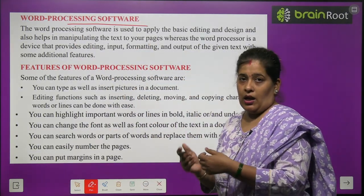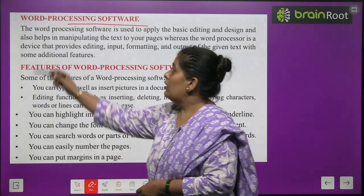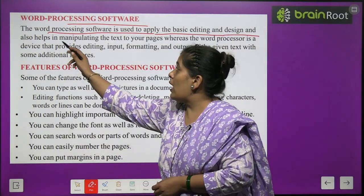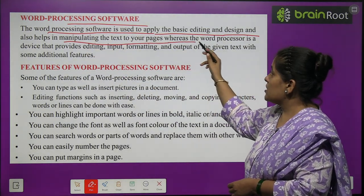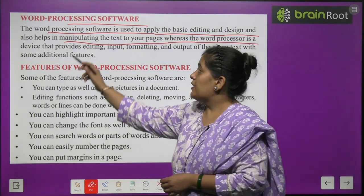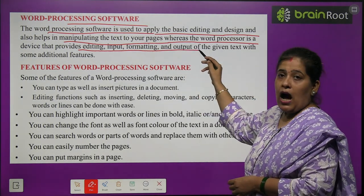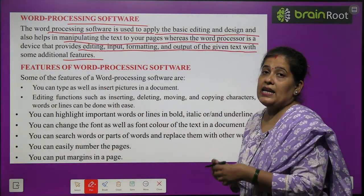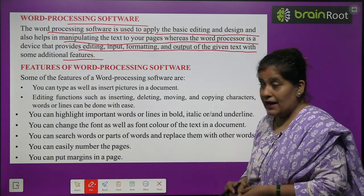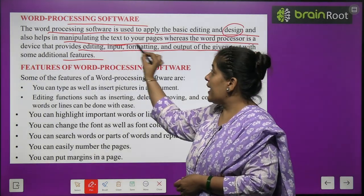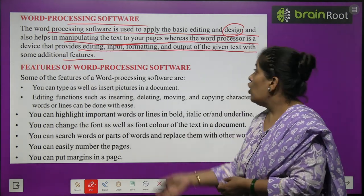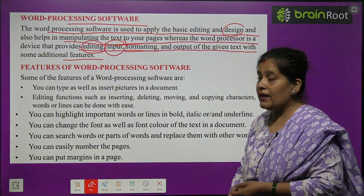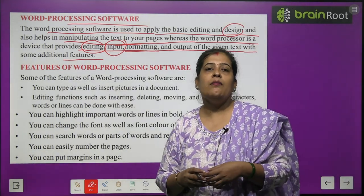Word Processing Software. The word processing software is used to apply basic editing and designing, and also helps in manipulating the text of your pages. The word processor is a device that provides editing, input, formatting and output of the given text with some additional features. It is a software that applies editing and design to your text pages — editing, input, formatting and output.